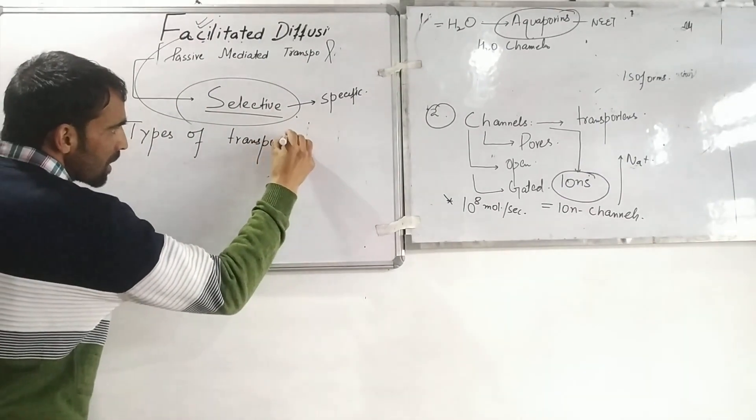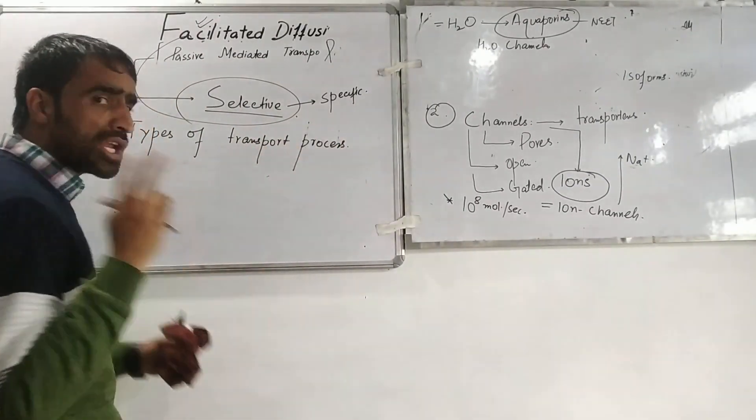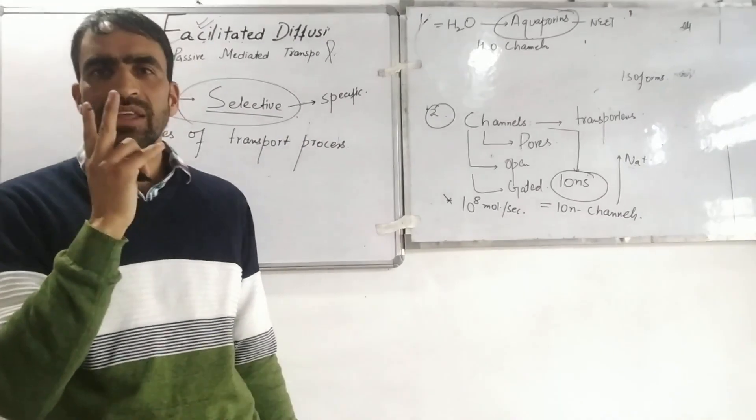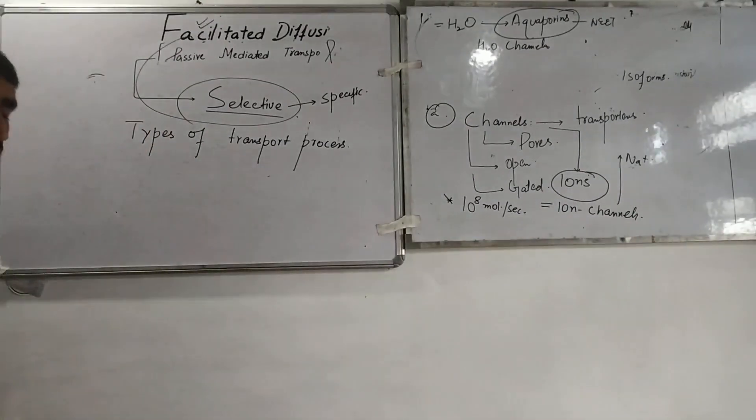Types of transport process. Three types of transport process can occur within biological systems. I will write, we will explain one by one.